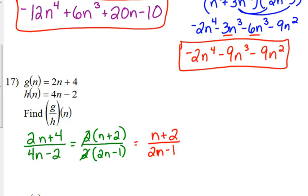One other thing, we need to state if there are any excluded values. What's the problem when we have division problems? What can we not divide by? Zero. So that bottom, 2n minus 1, is not allowed to equal zero. Let's find out what would give us a value of zero, and that would be 1 half. N cannot equal 1 half.